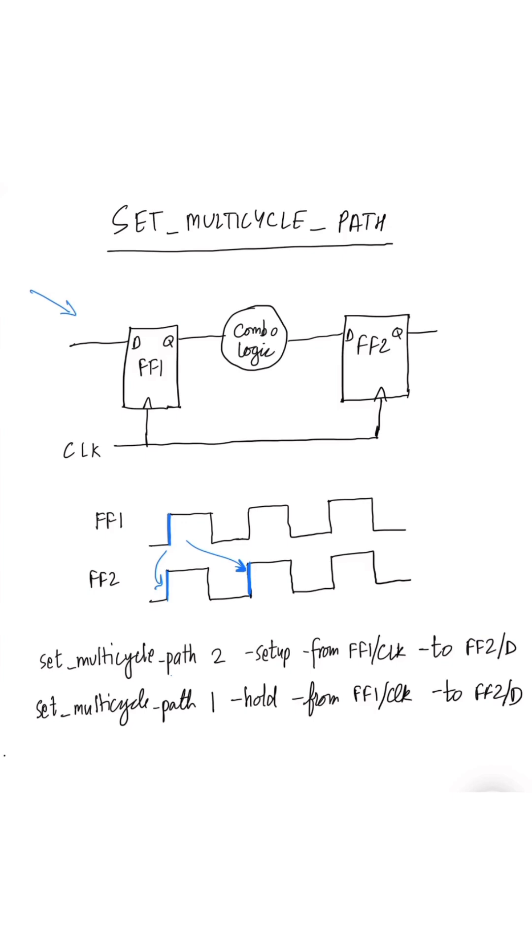Then in that case we will need to write a set multi-cycle path constraint to relax the setup timing analysis. So in this case, if data is captured every two clock cycles, data will be launched by flip-flop one at this clock edge but it will be captured by flip-flop two at this clock edge.